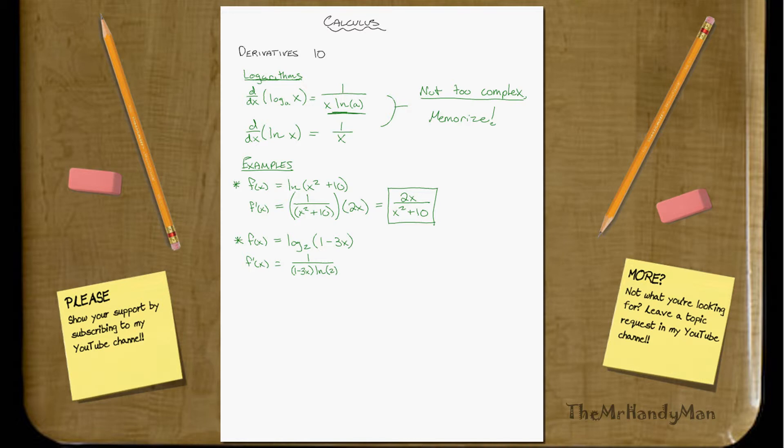Realize that LN of 2 is just a number. Then, we can't forget, we have to multiply the whole thing. Chain rule, remember. Multiply the whole thing by the derivative of what was inside. So, what is that? Negative 3. So, your solution is going to be negative 3 all over 1 minus 3X times LN of 2.